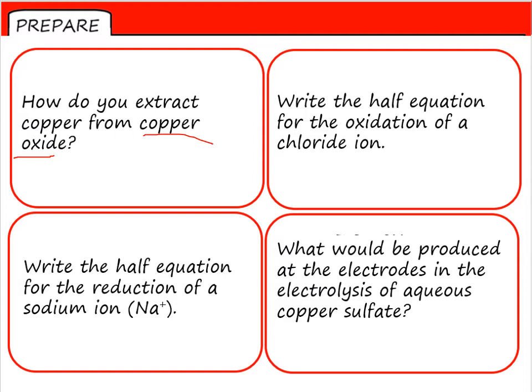Write the half equation for the oxidation of a chloride ion. Our chloride ion is Cl- and we know that we are losing electrons to form the element chlorine, so I'm going to end up with Cl2. Remember, chlorine is one of the halogens. It's in group seven, so it's diatomic. That means to have two atoms in a chlorine molecule, I'm going to need two chloride ions.